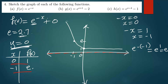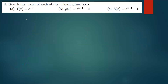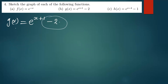Let's quickly move on to the next one. We have g of x equal to e to the power x plus one, minus two. The first thing we need to do is find the horizontal asymptote. The horizontal asymptote is simply the constant term, so it is y equals negative two.